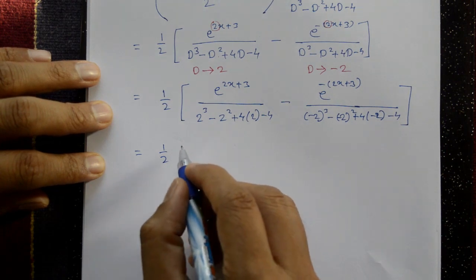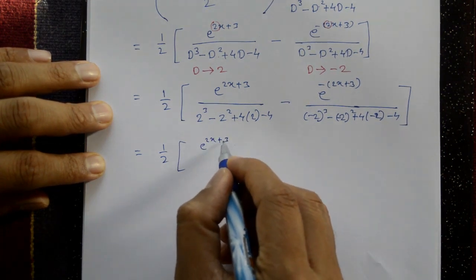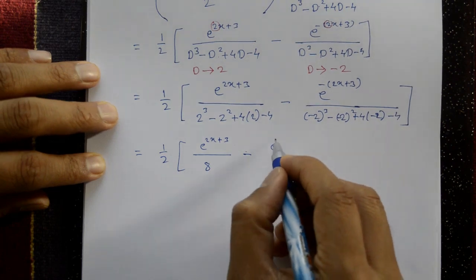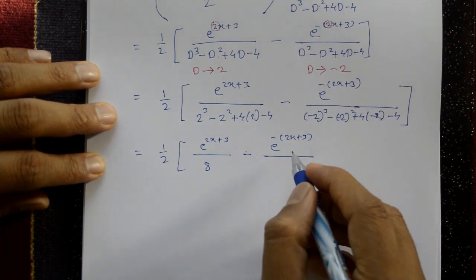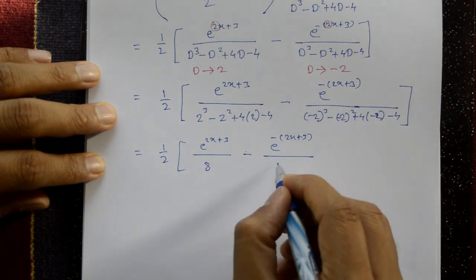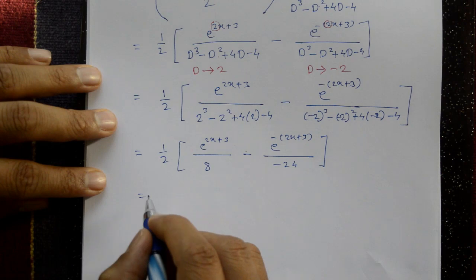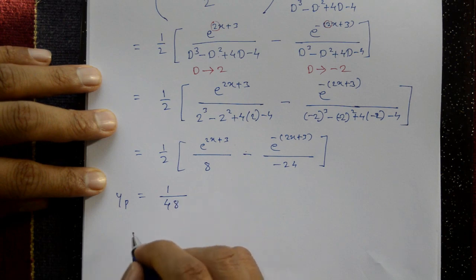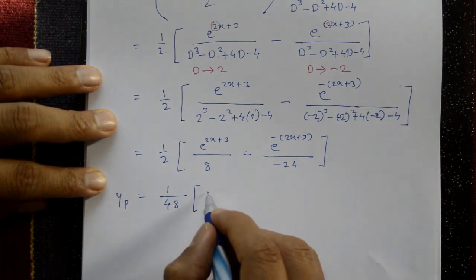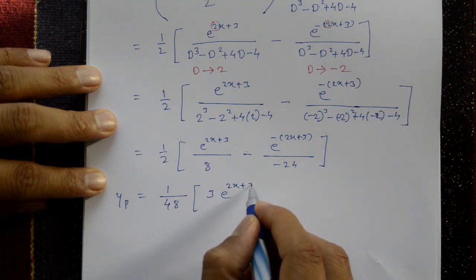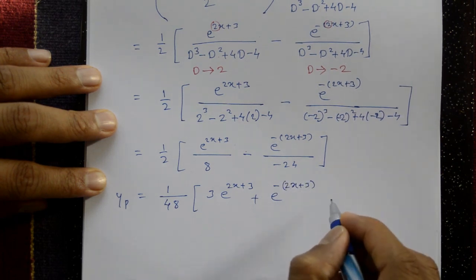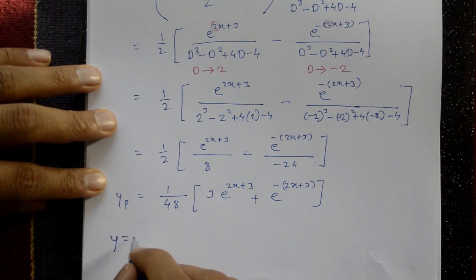Evaluating: (1/2) · [e^(2x+3)/8 - e^(-(2x+3))/(-24)]. Taking 1/48 outside: yp = (1/48) · [3·e^(2x+3) + e^(-(2x+3))].